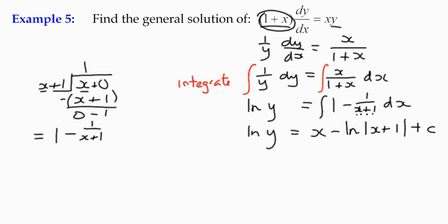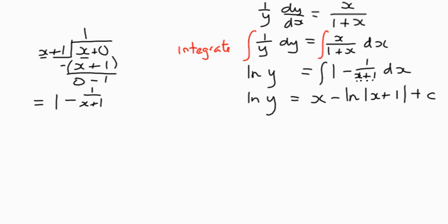We need to get rid of the log y. We've got log y equals, so we end up taking the exponent of both sides. E to the log y is equal to e to the power x minus the log of x plus one plus c, all that as a power. So we need to simplify that. The e and the natural log are inverse functions, so that becomes y equals.